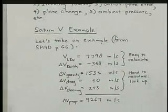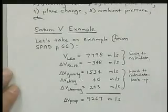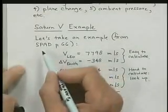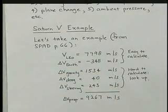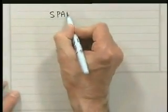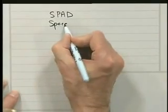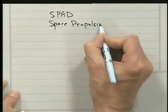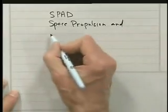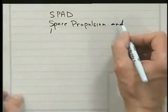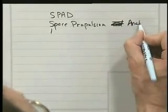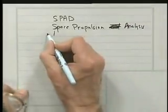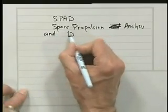Now let's take an example from the historic Saturn V, and this comes out of the SPAD book. That is the space propulsion analysis and design.